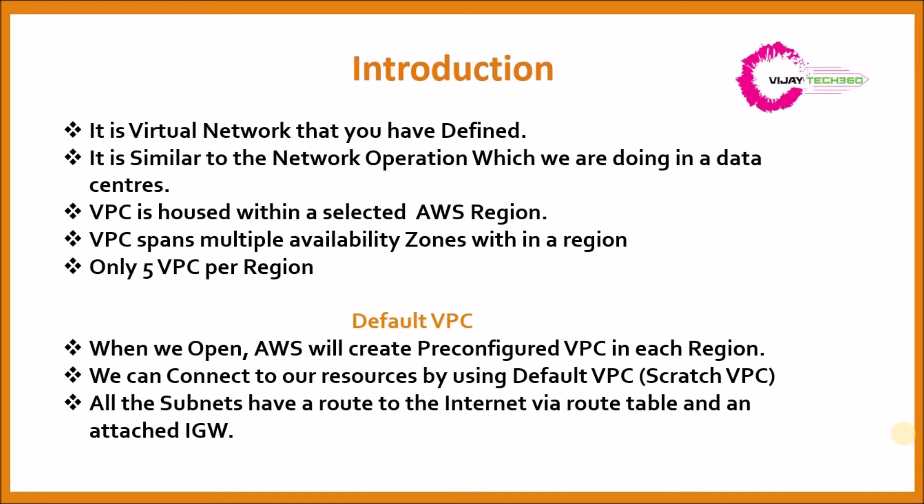VPC spans multiple availability zones within a region. Within a region, the minimum number of availability zones is two. This gives you high availability and fault tolerance, and VPC ensures that all resources are internally connected so that you get a highly available application.